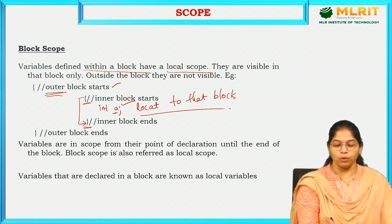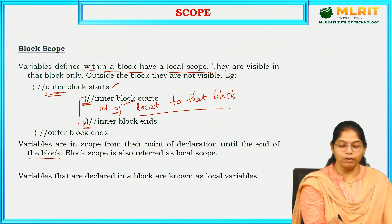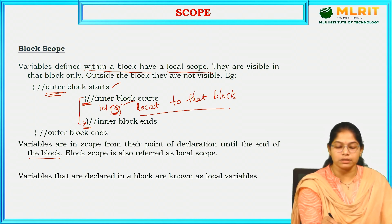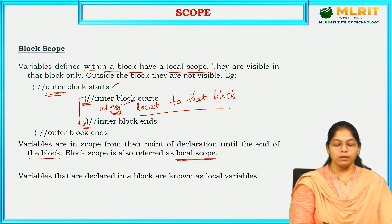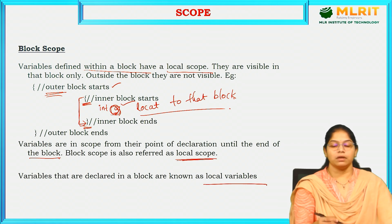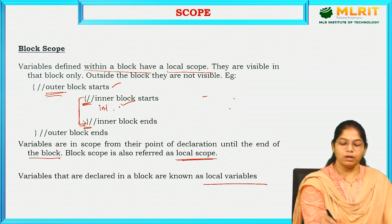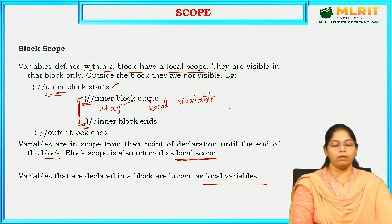Variables are in scope from their point of declaration until the end of the block. Block scope is also referred to as local scope because this variable becomes local to this block only. Variables that are declared in a block are called local variables. Here, a is a local variable — it is visible in the inner block only; the outer block cannot access it.